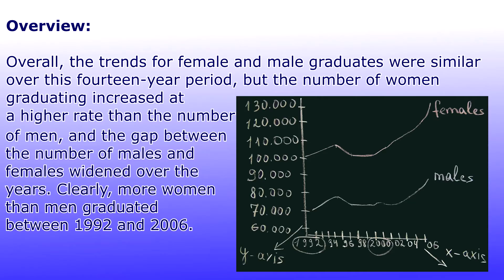Now let's have a look at our overview: 'Overall, the trends for female and male graduates were similar over this 14-year period, but the number of women graduating increased at a higher rate than the number of men, and the gap between the number of male and female graduates widened over the years. Clearly, more women than men graduated between 1992 and 2006.'